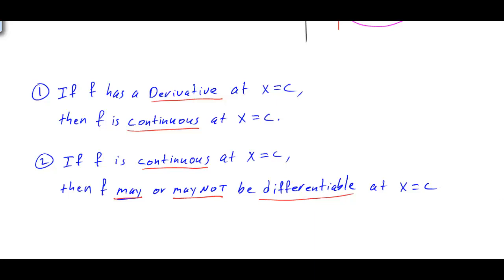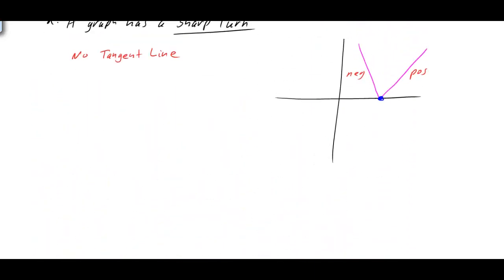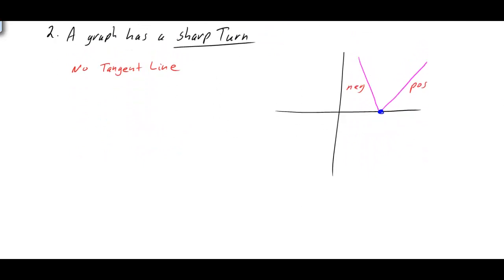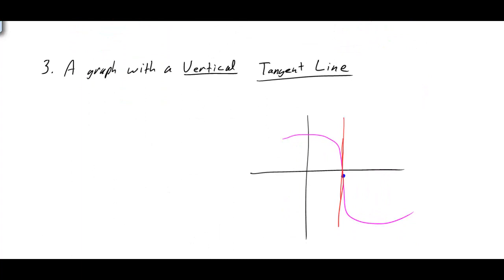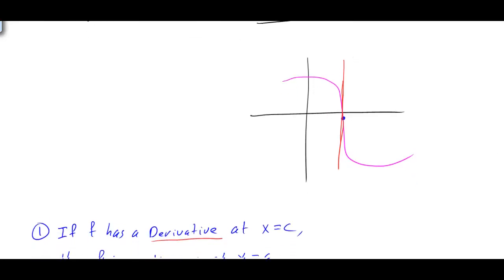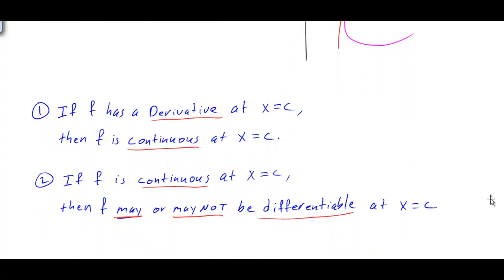We can state that because if we look at the second case and even the third case, our function is continuous at the point C at this blue dot, but the derivative is not defined. Therefore, the function is not differentiable at that point.